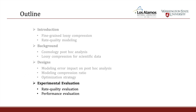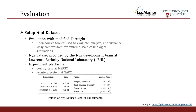For evaluation, we evaluated using a modified Foresight, which is an open-source toolkit for evaluation, analysis, and visualization of scientific data. The NICS dataset was provided by the NICS team at LBNL. We experimented on Cori and Frontera, using datasets with different dimensions containing six different data fields each.